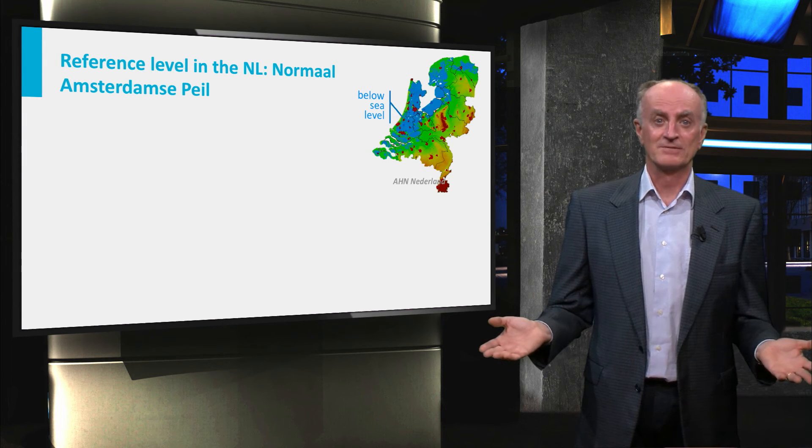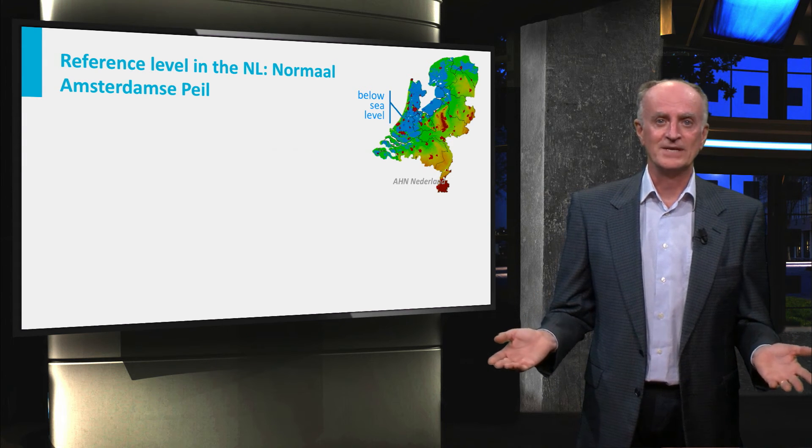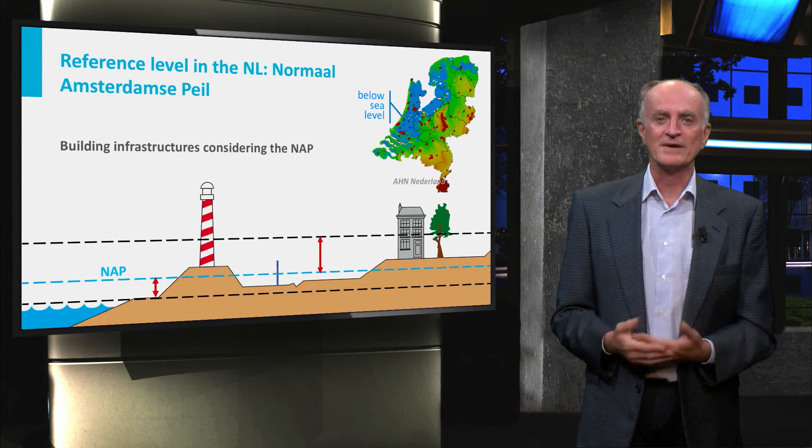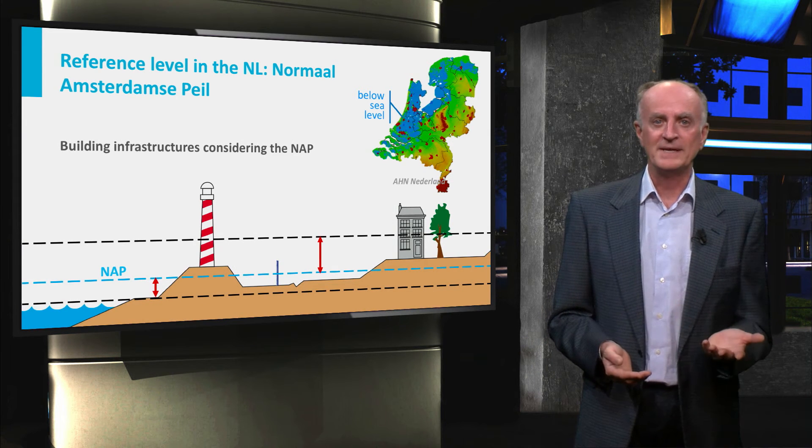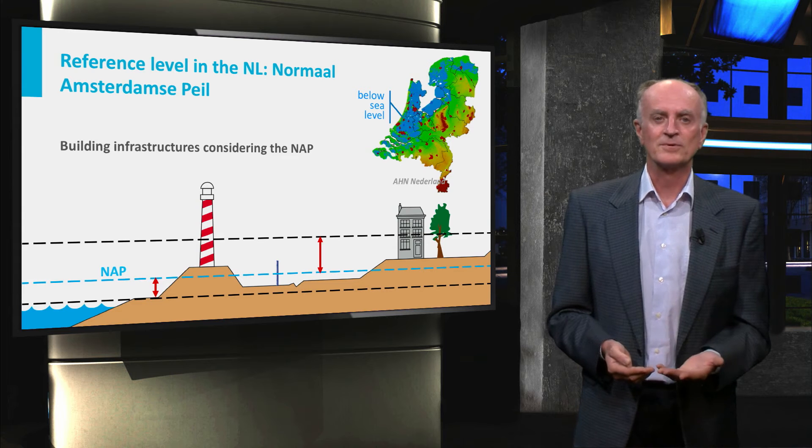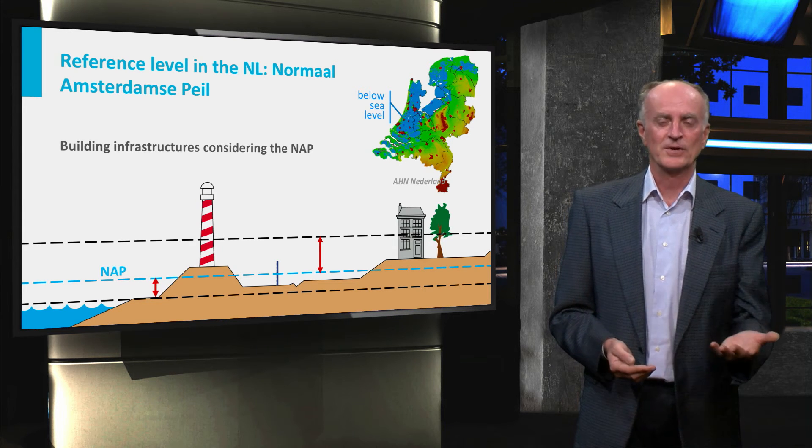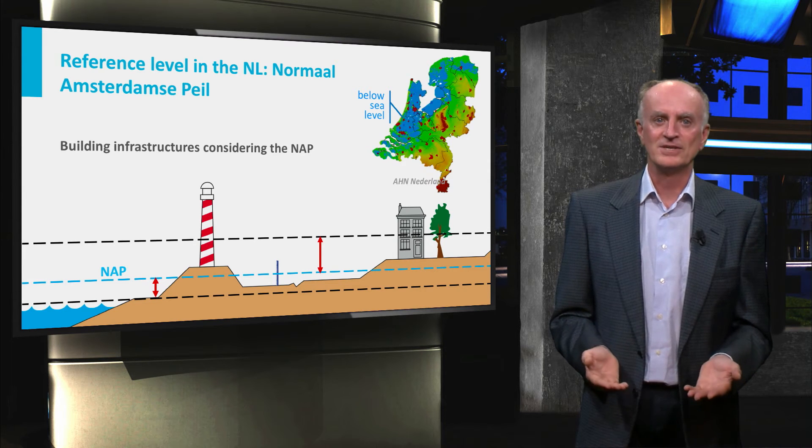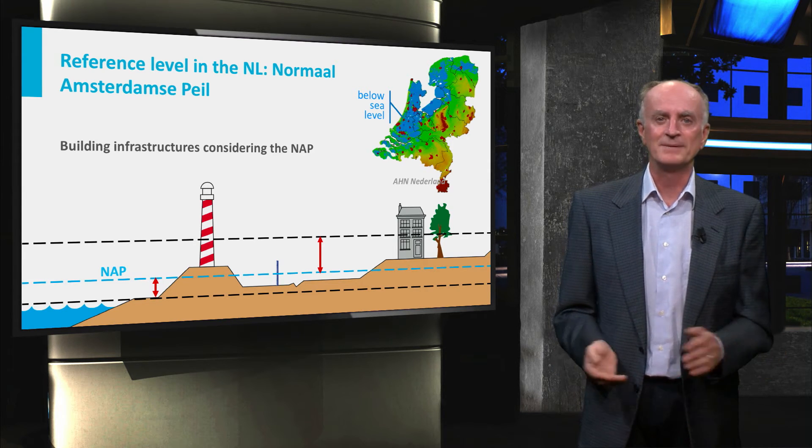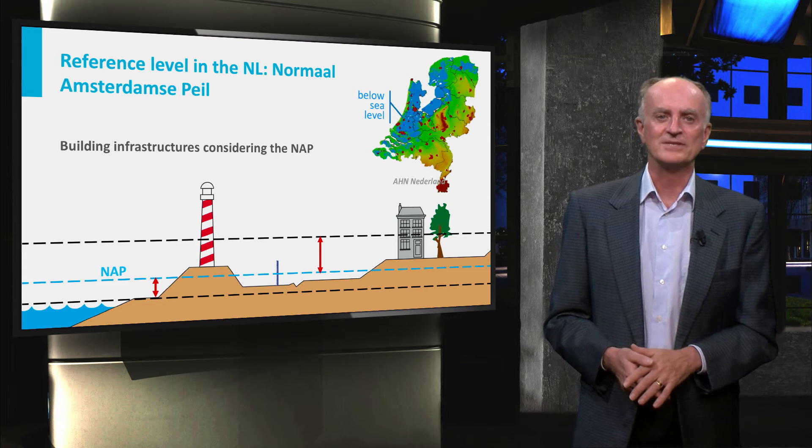Here, engineers have defined a reference level called NAP and this is of crucial importance to predict if water will flow for instance towards or out of the polders. A very precise definition of NAP is key to keep our feet dry.